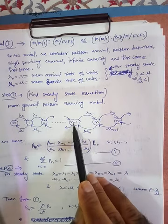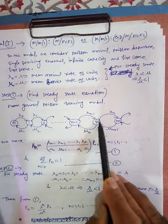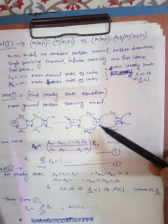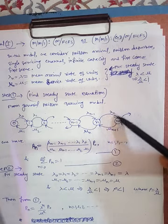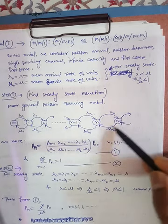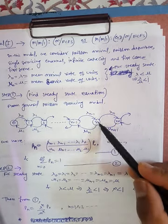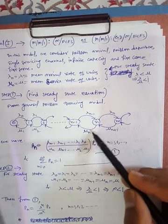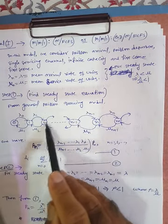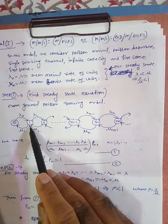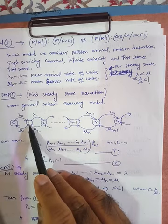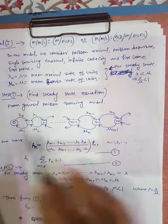From state n we can move to n−1 customers if a departure occurs. We can move from n to n+1 if there is an arrival at rate λₙ. Similarly, from state n+1, if one customer departs at rate μₙ₊₁ we return to n customers. If a customer departs at rate μₙ we move to n−1, and so on. If we have 2 customers and one departs at rate μ₂ we get 1, and if that customer departs at rate μ₁ we have 0 customers.